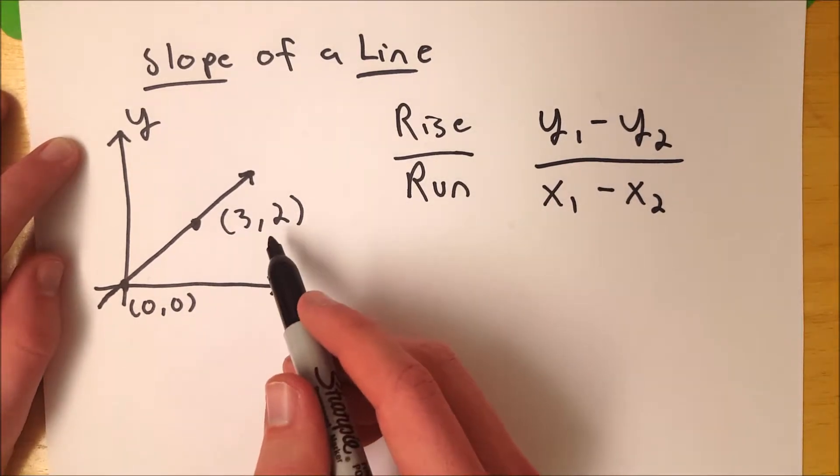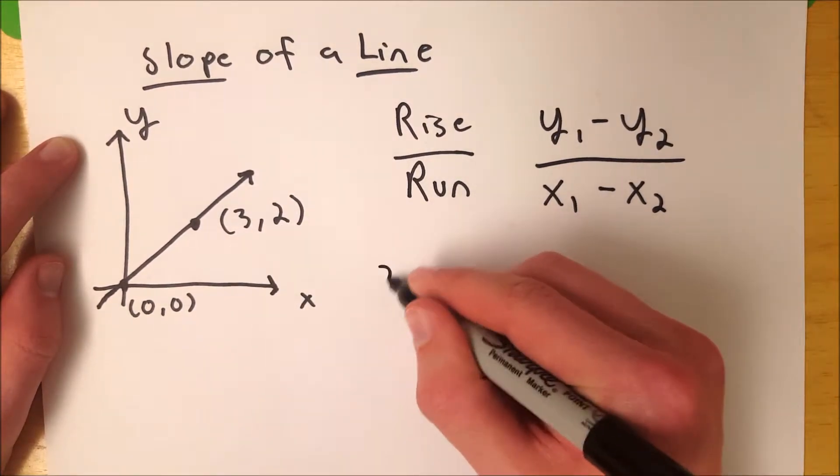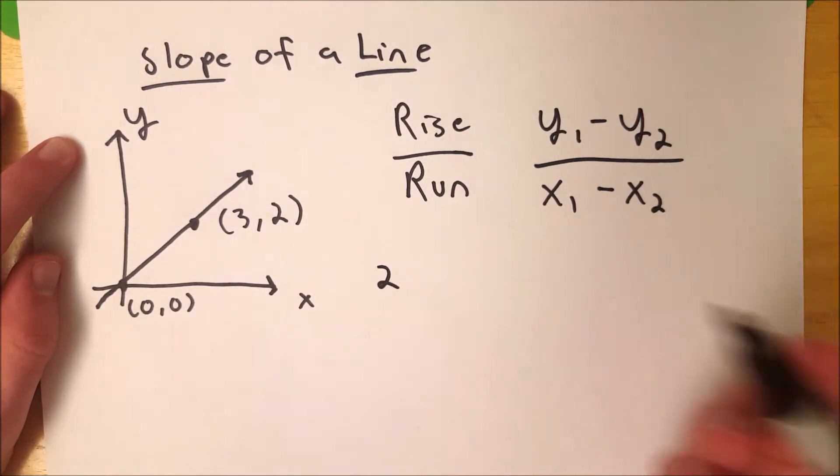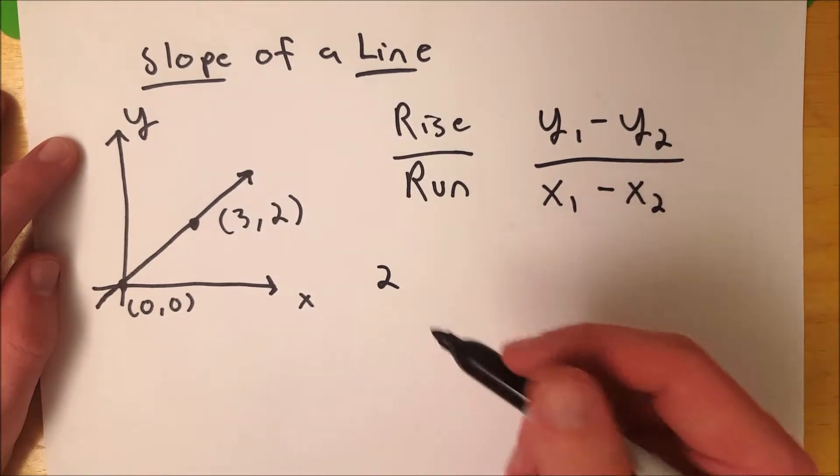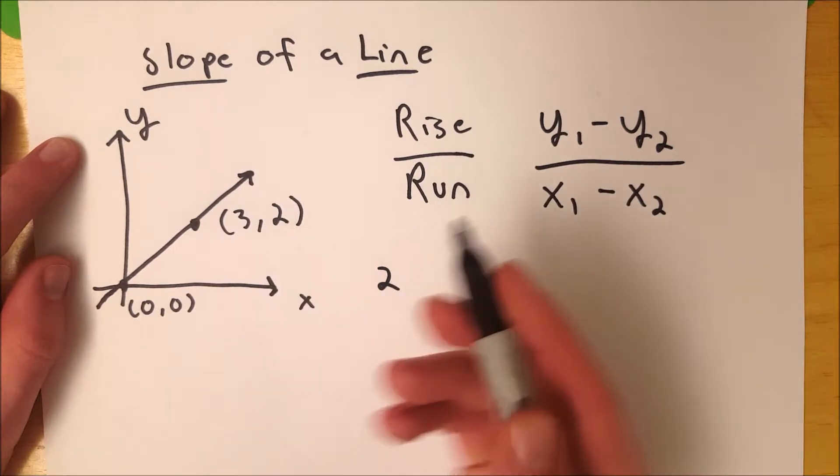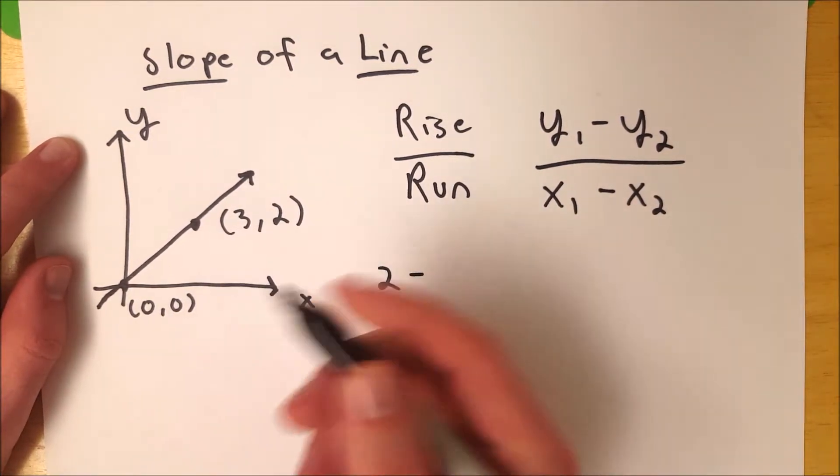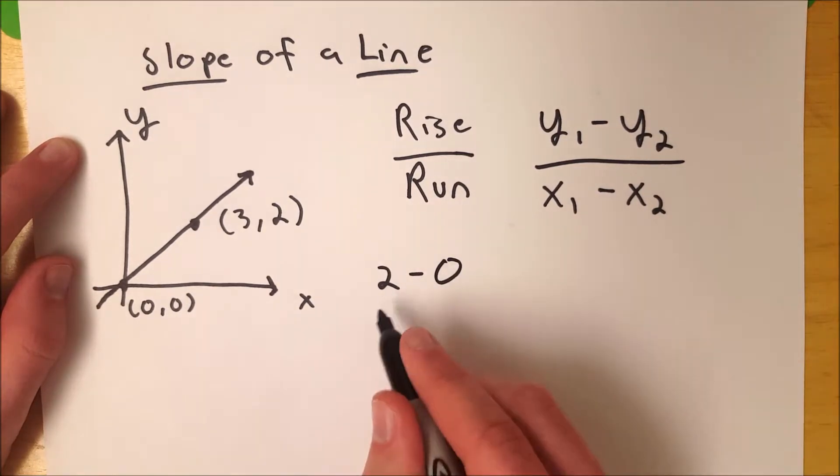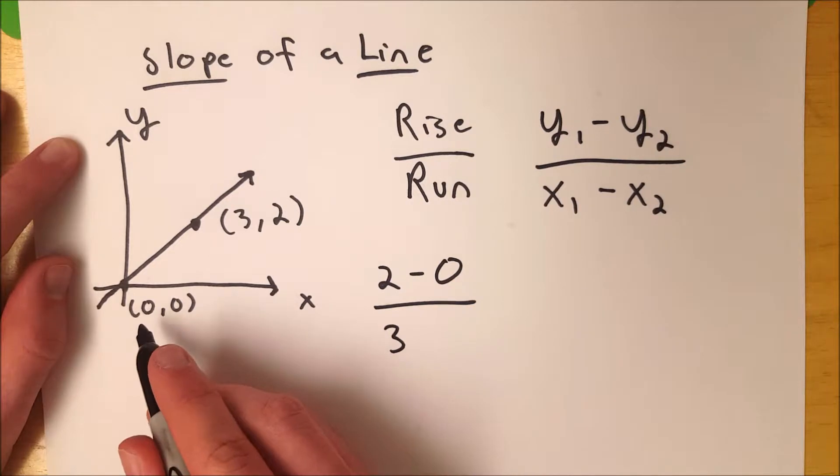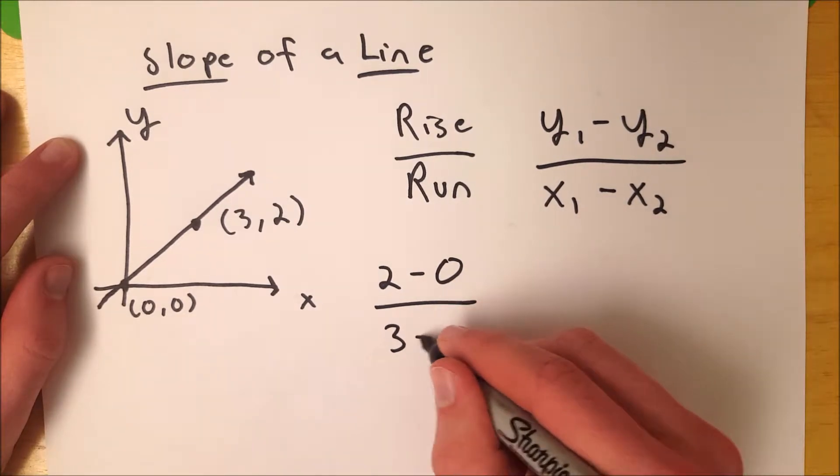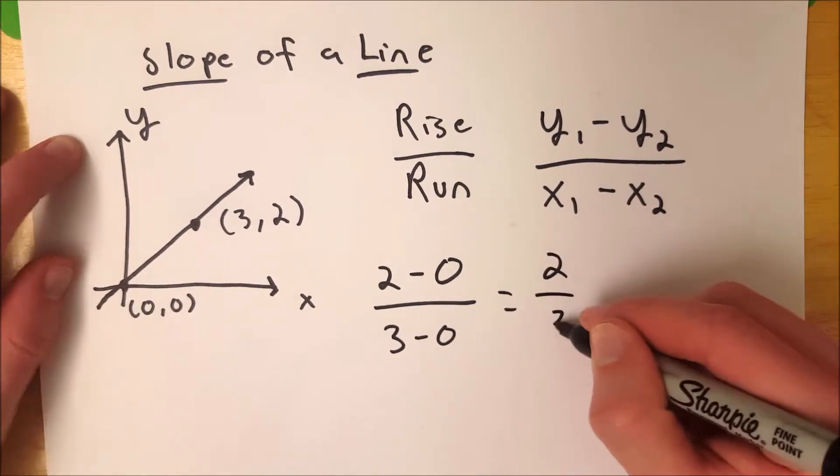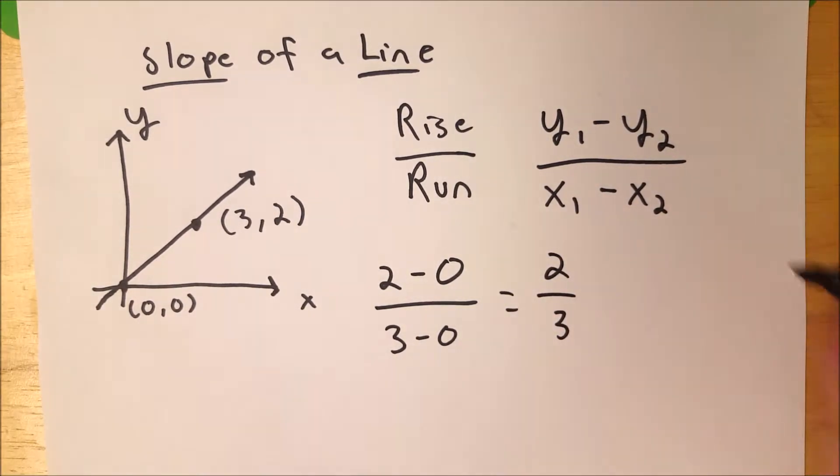So for this line, we can take 2, the y value of this point. Generally, I would recommend you try to pick the order such that you don't deal with negatives, just because that's a little easier and more intuitive. So we're going to take the first y coordinate, 2, and subtract the second y coordinate, 0, and divide that by the first x coordinate, 3, minus the second x coordinate, 0. So this is equal to 2 minus 0 is 2, over 3 minus 0 is 3. It equals two-thirds.